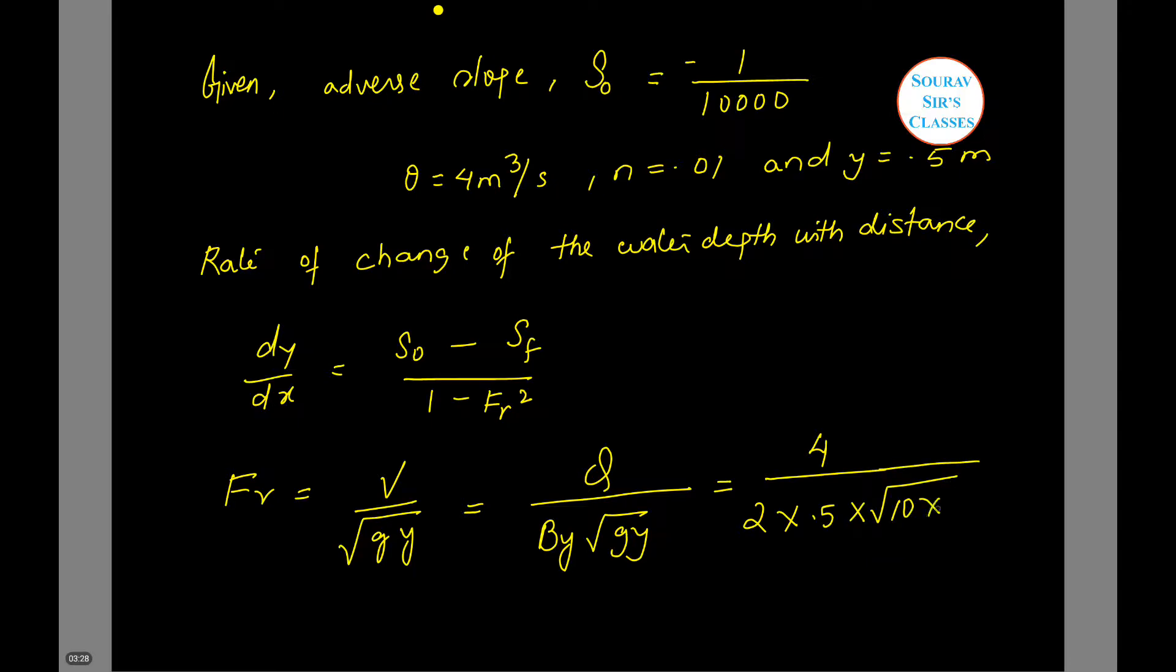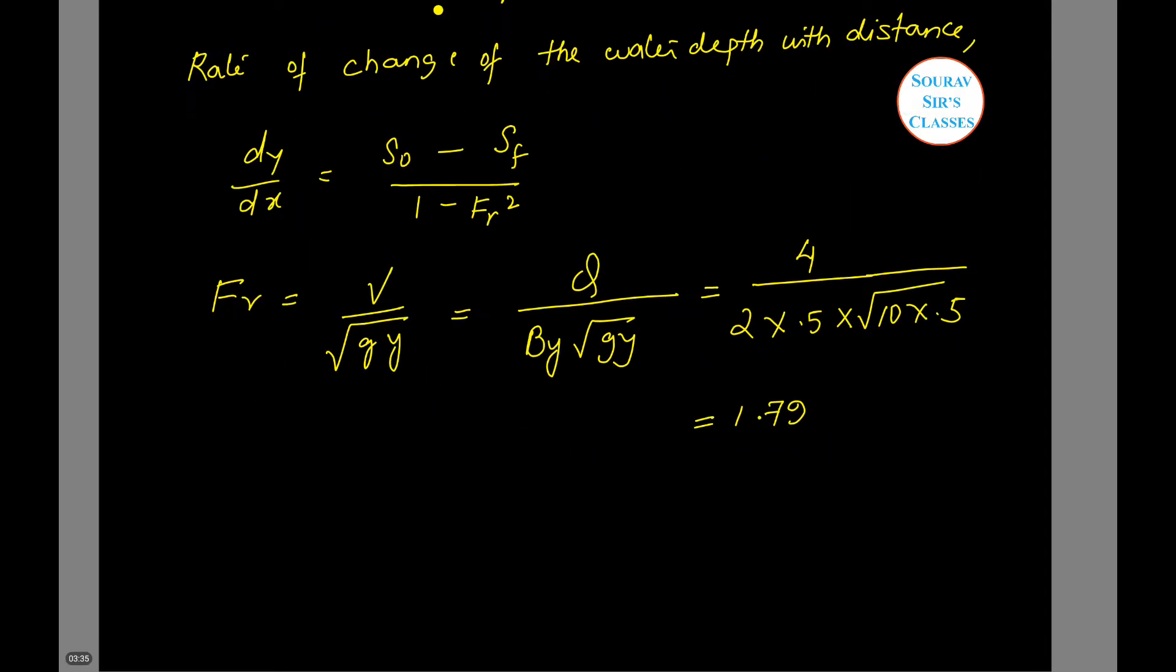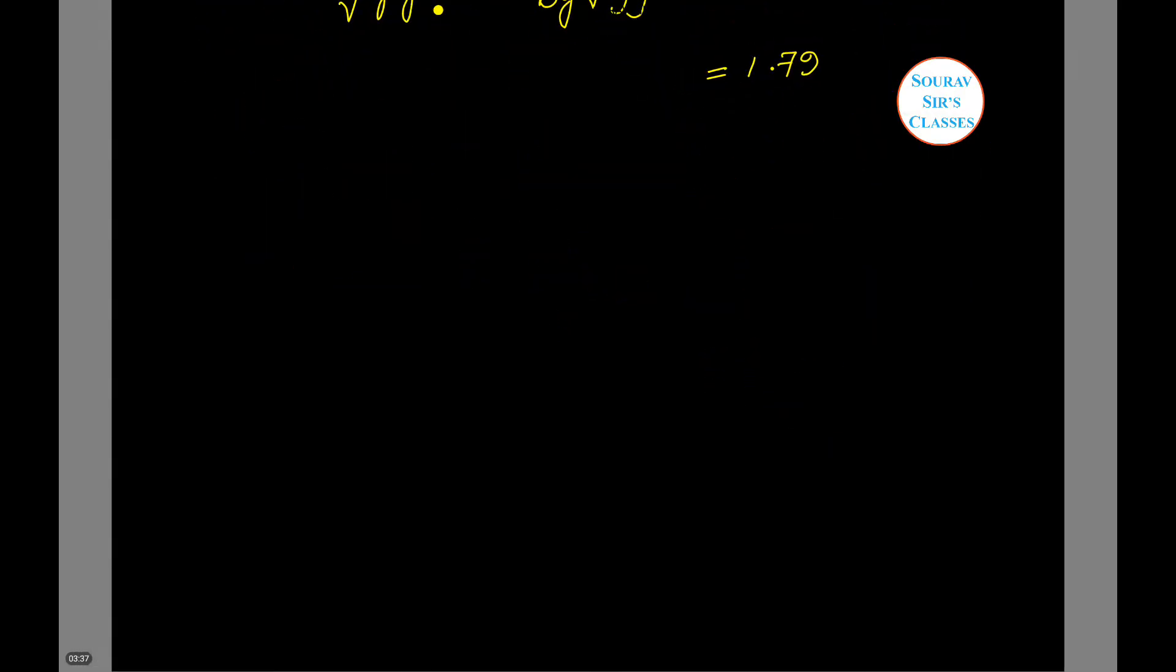From Manning's equation: Q = (1/n)AR^(2/3)Sf^(1/2). Rearranging: Sf^(1/2) = Qn/(AR^(2/3)). We'll substitute all the values given to us.